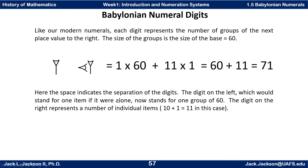Like our modern numerals, each digit represents the number of groups of the next place value to the right, and the size of the groups is the base — 60. So here we have a two-digit number. Starting on the right, those are units: there are 11 single items, so 11 times 1 is 11. The digit on the left is 1, but it's in the second place, so it's one group of 60. We have 60 plus 11, which equals 71 in Hindu-Arabic numerals — one group of 60 and 11 singles is the same as seven groups of 10 and one single.